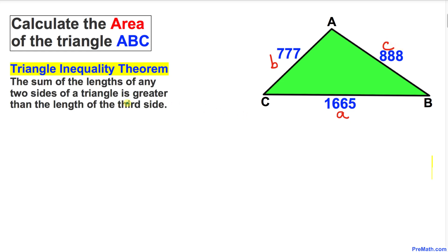Before we go any further, let's talk about the triangle inequality theorem. The sum of the lengths of any two sides of a triangle is always greater than the length of the third side. In other words, these inequality conditions must be satisfied: a plus b must be greater than c, a plus c must be greater than b, and b plus c must be greater than a.